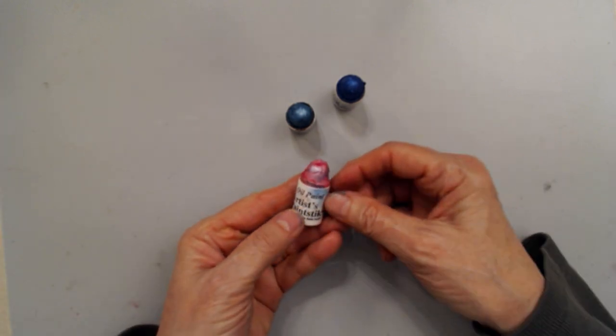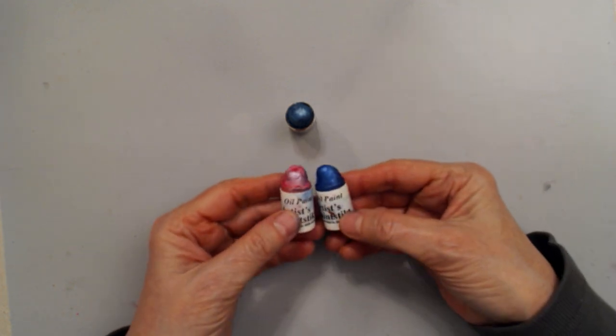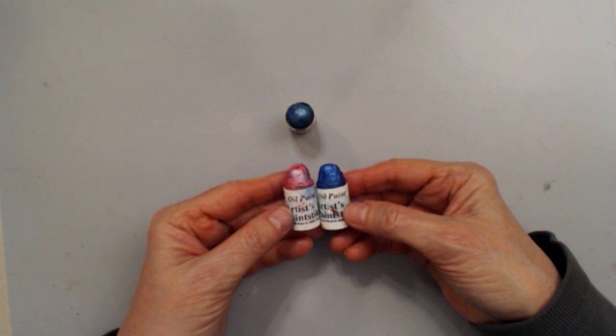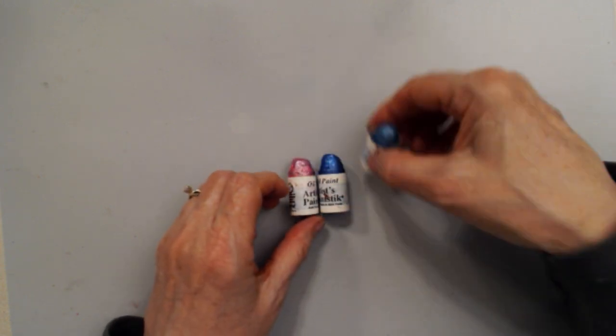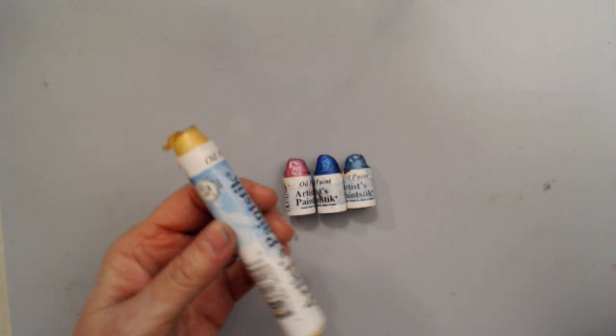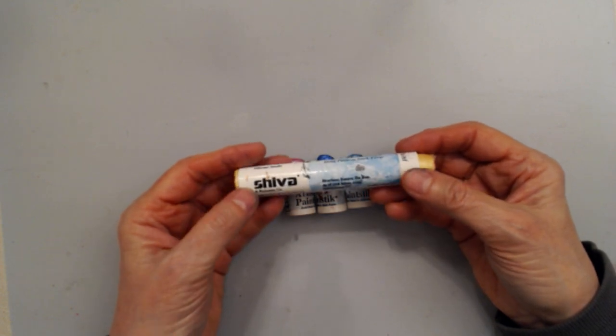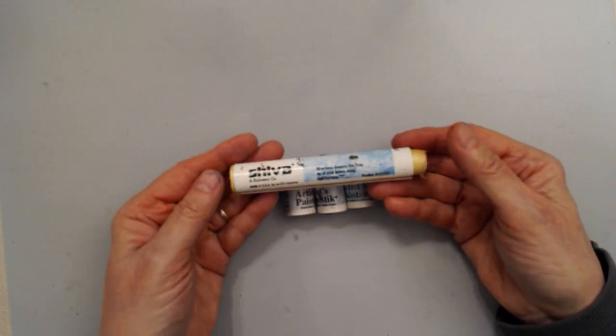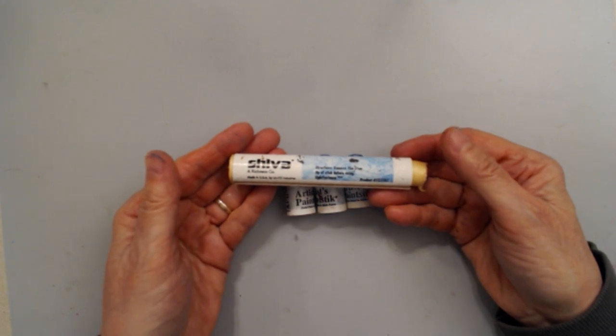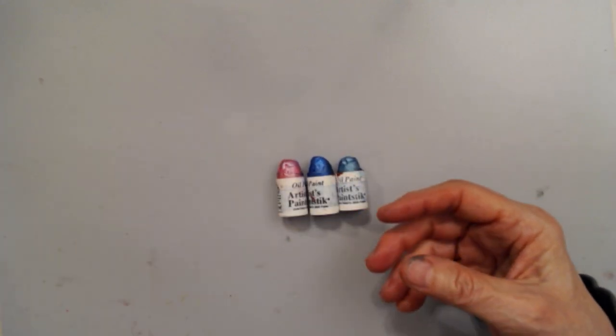And these are paint sticks. These are the little bitty ones, the sample size where you can get lots of different colors in this little sample size to try them out to see if you like them. The regular size paint stick comes in a stick of this size. This particular one is the iridescent blender, but this is the size that the paint sticks come.